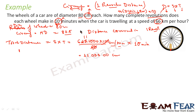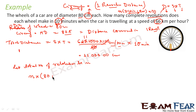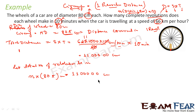The distance covered in one revolution is 80π centimeters. Let the total number of revolutions be n. In n revolutions, the car will cover n times 80π centimeters. This must equal the total distance covered: 1,100,000 centimeters. Both sides are in centimeters, so we can equate and solve for n.